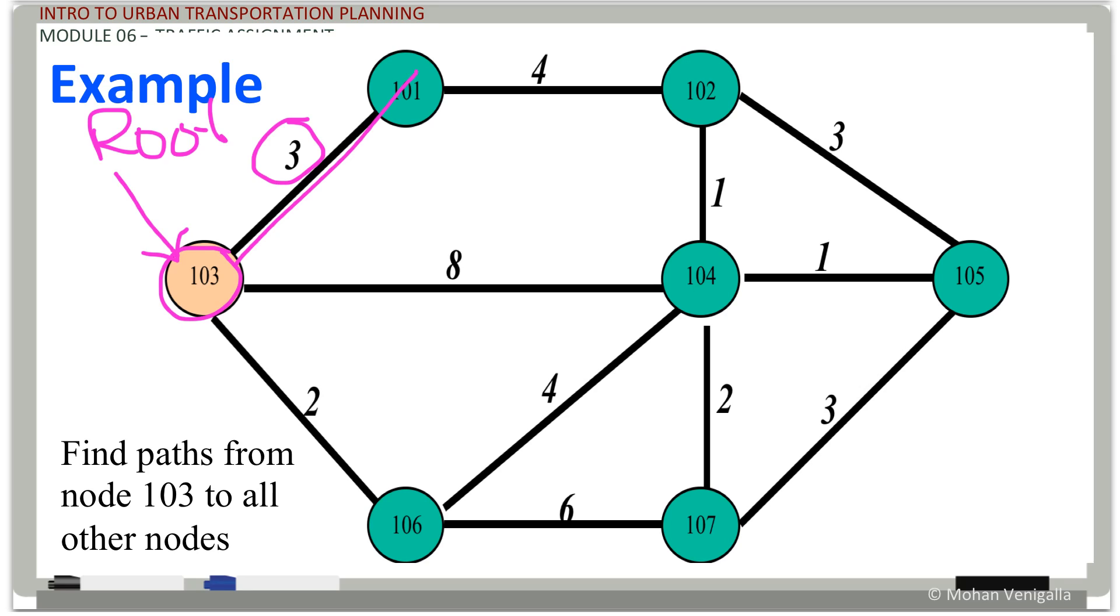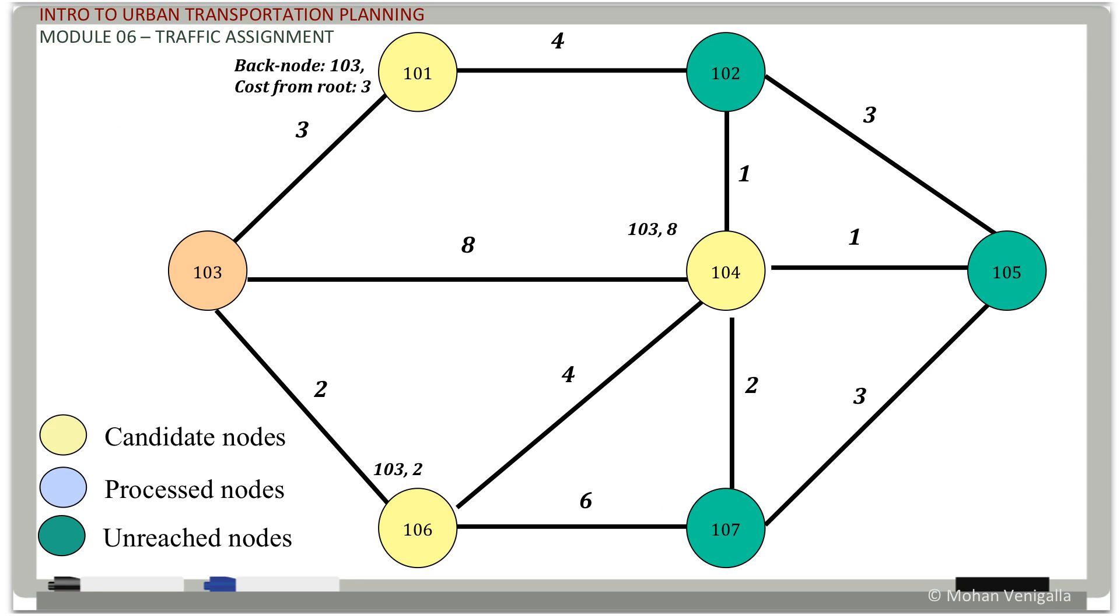Well, visually you can pretty much do it, but we want to have a methodical way of doing this so that computer can understand and do it fast for you. And remember, it's called label correcting algorithm. So let's do it. Okay, here is your root. The root is already in the solution, that means you're already there. And from there, where can you go? You can go to 101 via this route, or 106 via this route. It takes you two units of time, let's call this minutes.